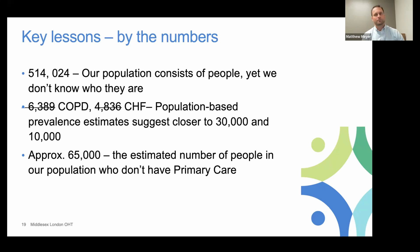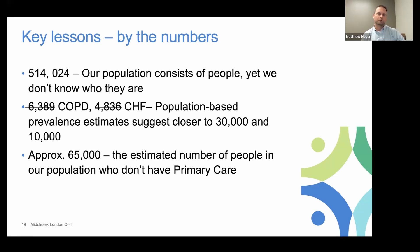Another reflection: when we looked through data holdings, COPD showed 6,389 people in the Ministry data, but population-based prevalence estimates suggested we should see closer to 30,000 people in our attributed population. The same was true for congestive heart failure — the data was reporting about half of what population-based estimates would predict. This was a really important conversation, both at the Coordinating Council and as we reached out to partners — it allowed us to start asking: who are we missing in these data holdings?